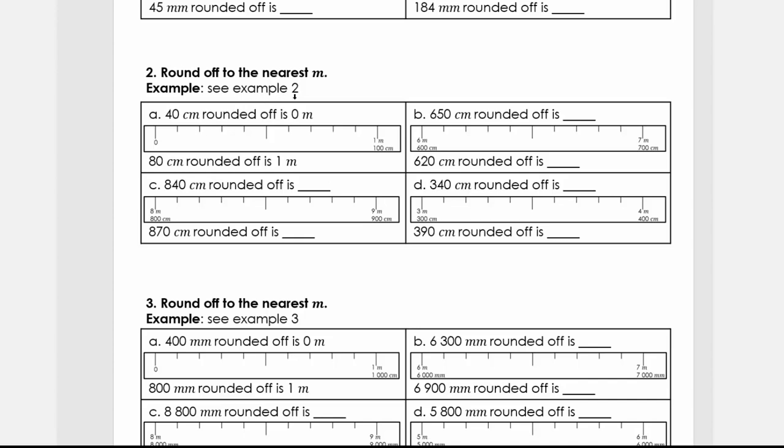Welcome back. We're going to round off to the nearest meter. Here we got 40 centimeters. From zero to one represents one meter. We have 40, so we got 10, 20, 30, 40 will be here. If we're going to round it off, we're going to round it to zero meters. But if we got 80, we would round it off to one meter.